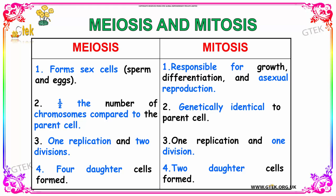Now we are going to see about Meiosis and Mitosis. In Meiosis, it forms sex cells — that is, sperm and eggs. Whereas in Mitosis, it is responsible for growth, differentiation, and asexual reproduction. In Meiosis, the cells have half the number of chromosomes compared to the parent cells. But in Mitosis, cells are genetically identical to the parent cells. Meiosis has one duplication and two divisions, while Mitosis has one duplication and one division. Meiosis forms four daughter cells, but Mitosis forms only two daughter cells. You can see the differences between Meiosis and Mitosis depicted here.